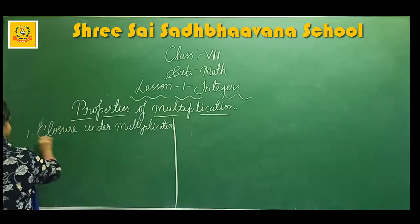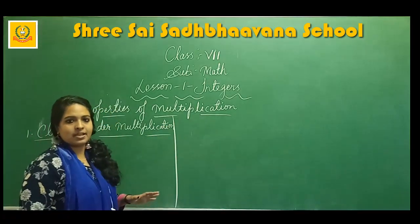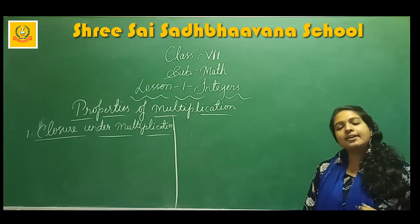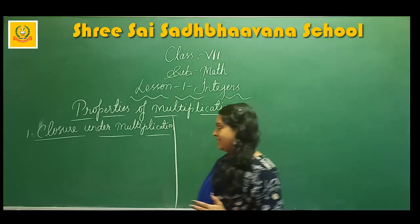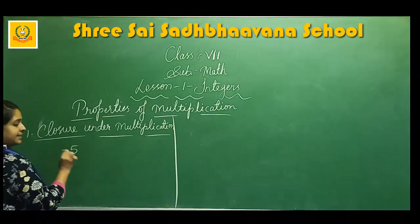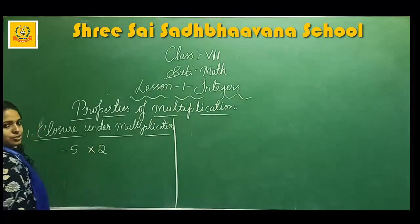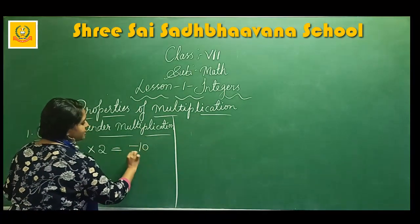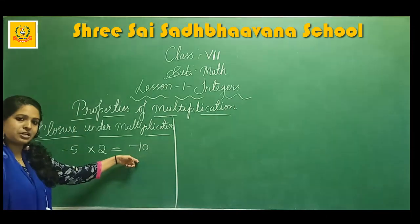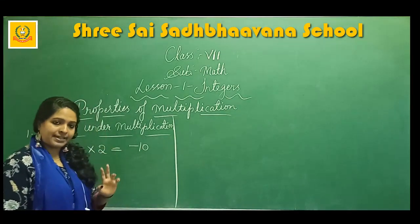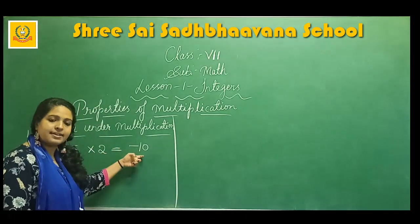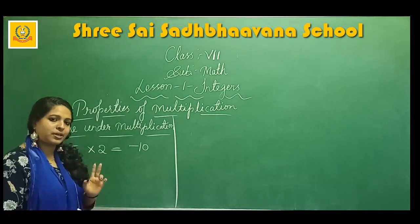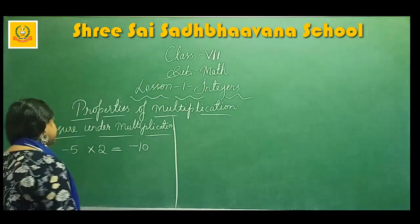The first property is closure under multiplication. This property says that when you are multiplying two integers, the answer will also be an integer — the product will also be an integer. For example, minus 5 into plus 2 equals minus 10, which is also an integer. So when you multiply two integers the answer is always an integer — this property is known as closure under multiplication.